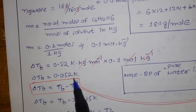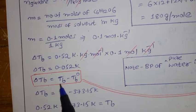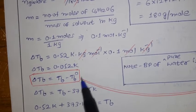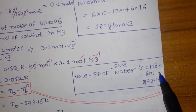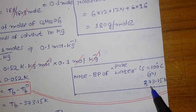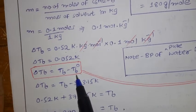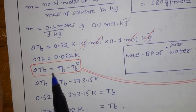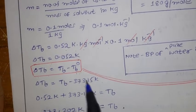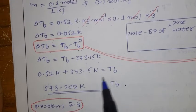So ΔTb = 0.052 kelvin. But they ask for the boiling point of the solution, so we use ΔTb = Tb − Tb°. The boiling point of pure water is 100°C, which converts to 373.15 K. You must remember the Kb value and boiling point of water in kelvin.